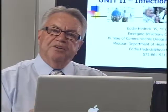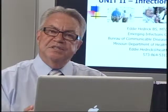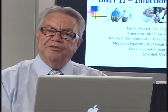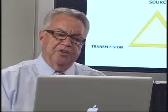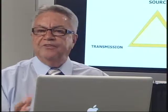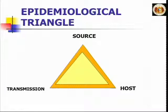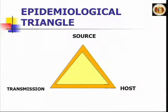What I want to talk about is how these diseases come about in healthcare facilities. In epidemiology, we call this the epidemiologic triangle. It says that you need three things for an infection to develop in a patient in a healthcare facility: you need a source of infection, a means of transmission, and a susceptible host.